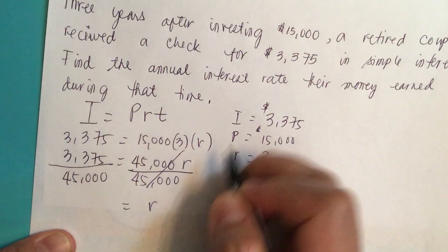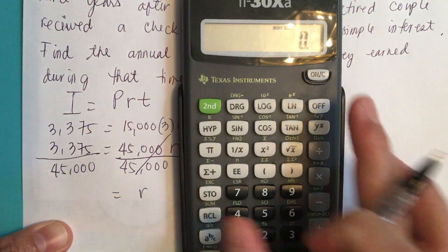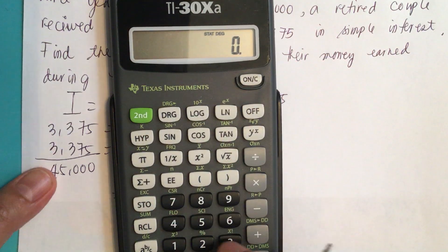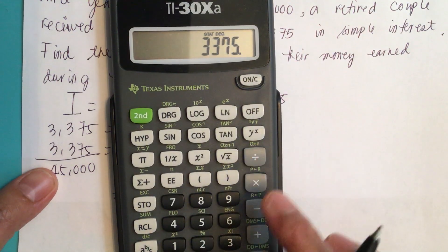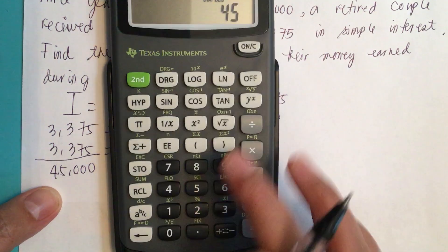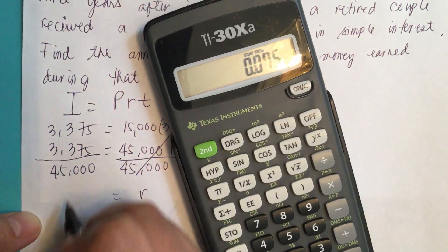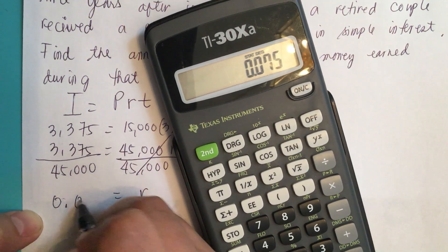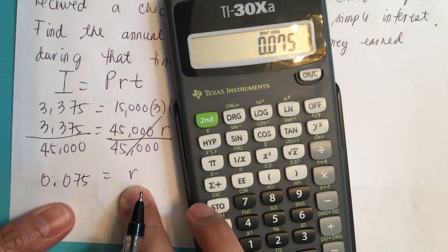$3,375 divided by $45,000 equals 0.075. So this is the rate or the interest rate.